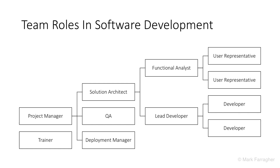Starting at the right of the diagram, we have user representatives. User representatives are the people who are going to use the software — these are business people who have a pressing need that needs to be resolved with software. Often you have a large group of end users in a company, so these people nominate one person to represent them. These user reps convey their requirements to someone who will combine them into a functional specification.